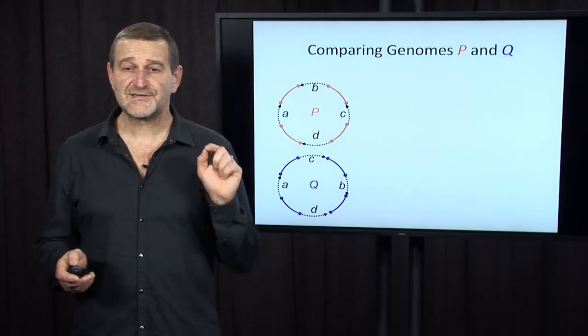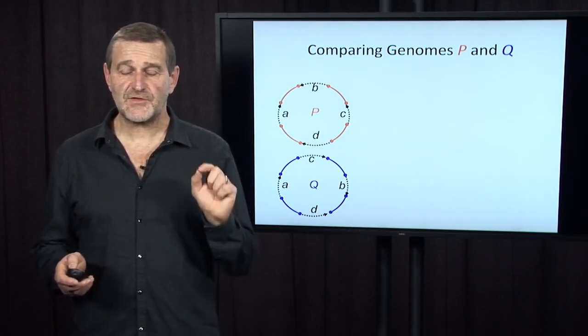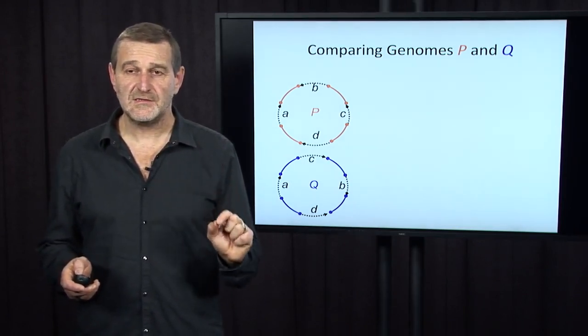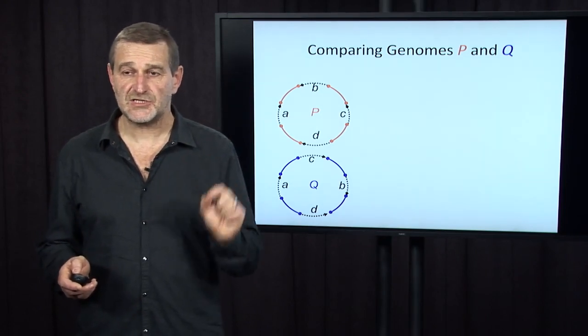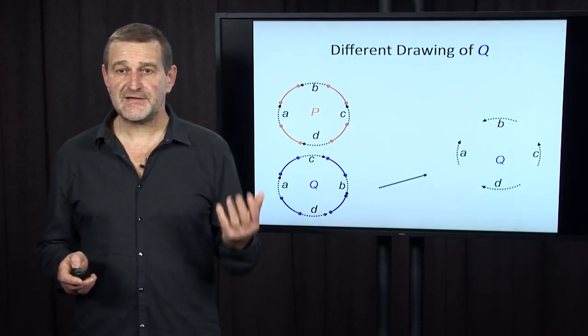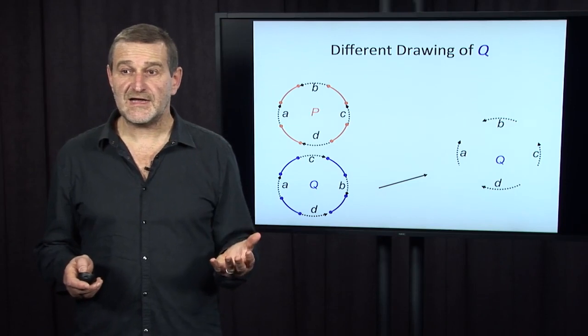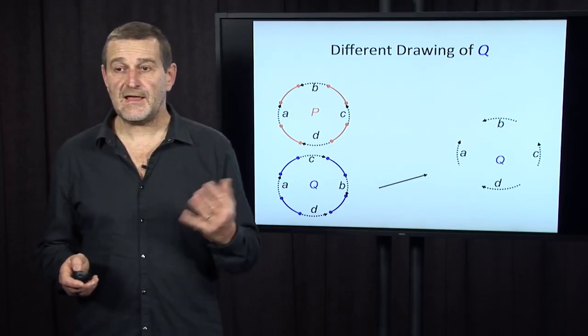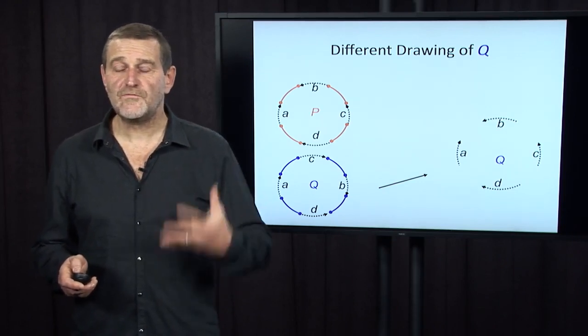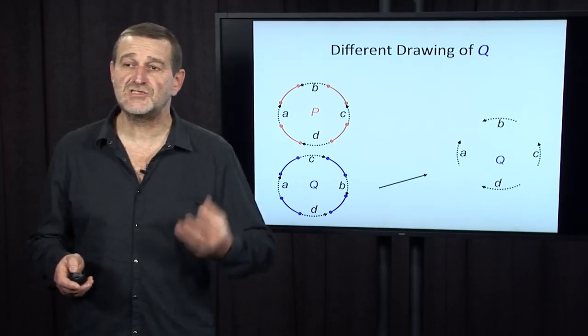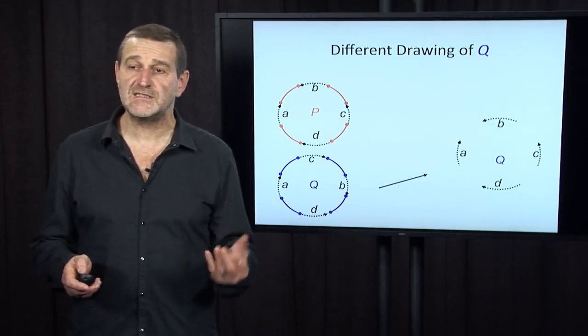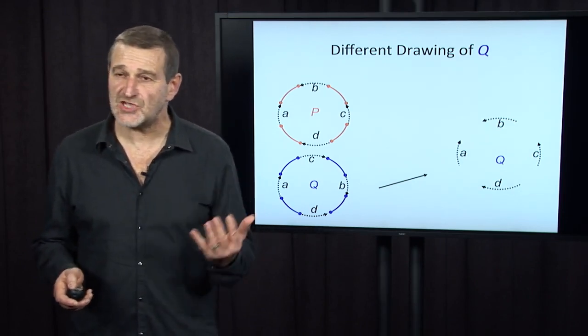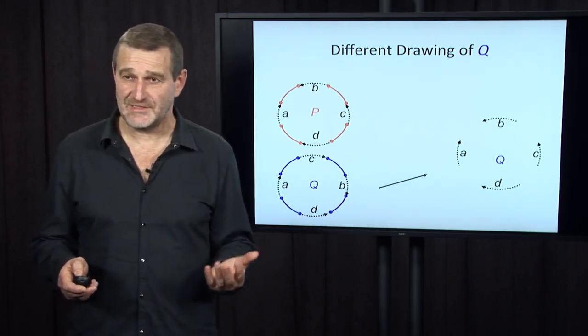Now let's arrange the black edges of Q in the same order they're arranged in genome P. So they will be arranged as plus A, minus B, minus C, plus D. We do not change genome Q, we just show it differently.